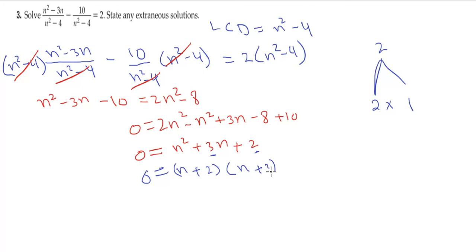Now to find the solution, set each factor equal to 0. So n + 2 = 0, and n + 3... wait, it's not 3, pardon me, it's 1. So n + 1 = 0. This gives n = -2 and n = -1. These are our solutions, but first we need to check for extraneous solutions.